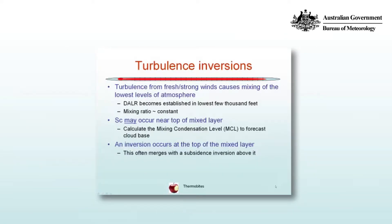Turbulence inversions. Turbulence from fresh to strong winds can cause mixing of the lowest levels of the atmosphere and establishes a dry adiabatic lapse rate in the lowest few thousand feet and a constant mixing ratio. If there is a mixing condensation level below the top of the mixed layer, stratocumulus may occur.